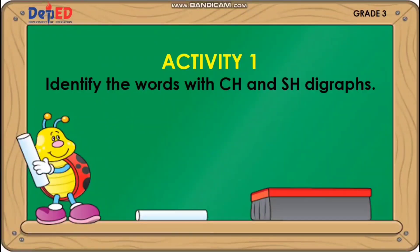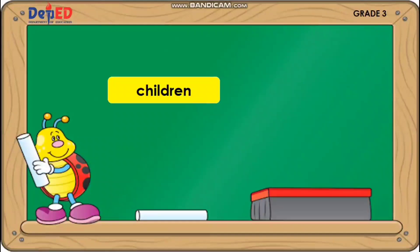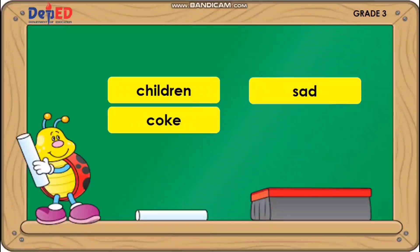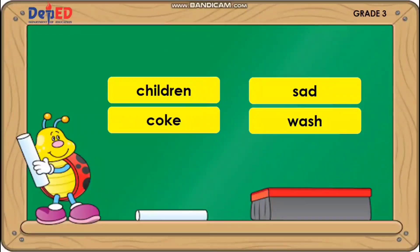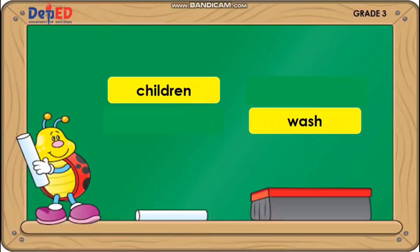For our first activity, identify the words with CH and SH digraphs. Children. Coke. Sad. Wash. Which word has consonant digraph? Very good — Children and Wash.